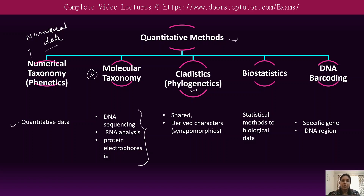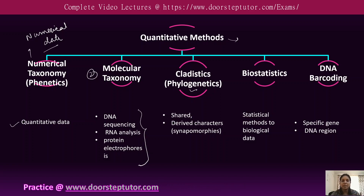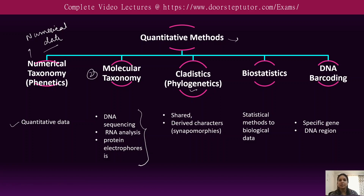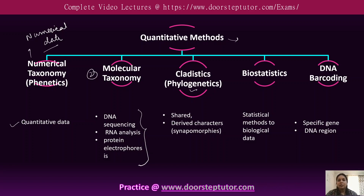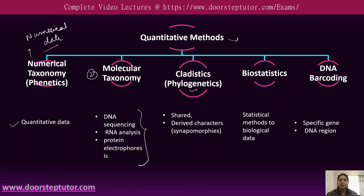The third one is cladistics or the phylogenetic method, which is based on shared and derived characters — characters shared with an ancestor or derived from an ancestor. On that basis, the cladistic or phylogenetic classification is given. Then there is biostatistics, which uses a statistical approach to biological data, on the basis of which various population genetics and organism genetics are classified.